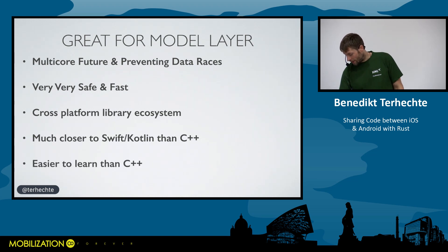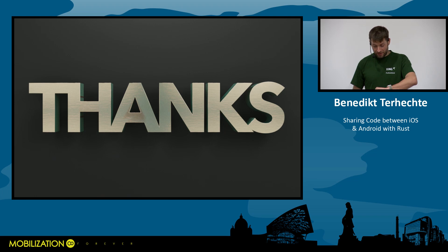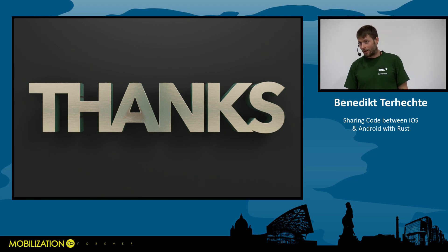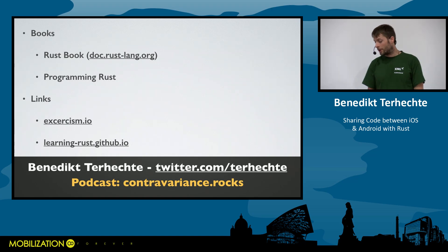Going back to the main topic: should you share code between iOS and Android with Rust? Yes — especially if you have a Swift or Kotlin codebase, no strong C++ developers, and need a model layer. Rust is great for the model layer specifically: built for multi-core, good at preventing data races, very safe and fast, doesn't belong to any platform, has great cross-platform libraries from the Firefox ecosystem, and is much closer to Swift and Kotlin than C++. Thanks for listening!